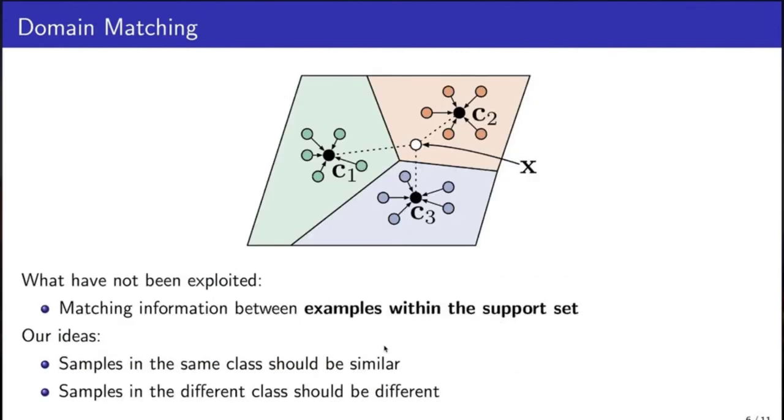Our intuition is that the representation vector of instances in the same class should be similar. Whereas representation vectors of instances in different classes should be different.